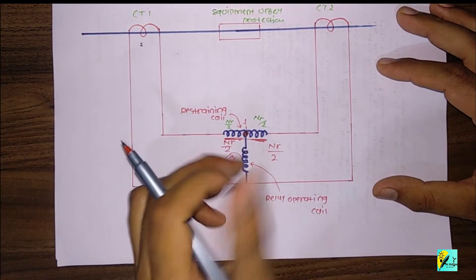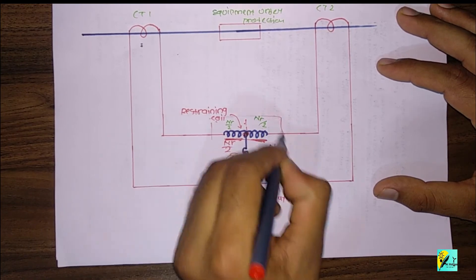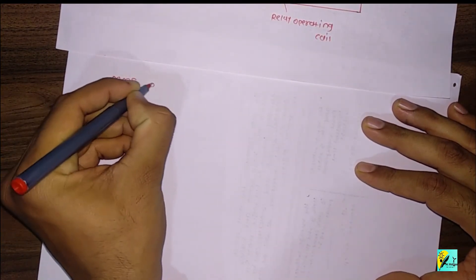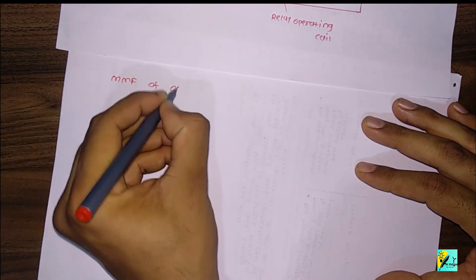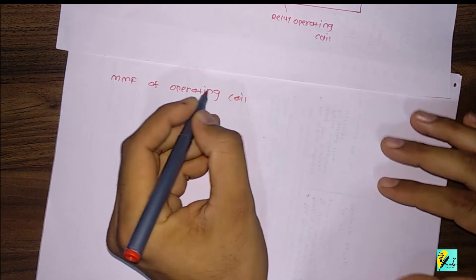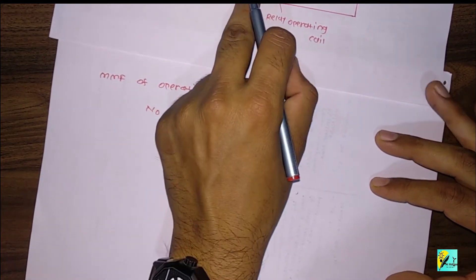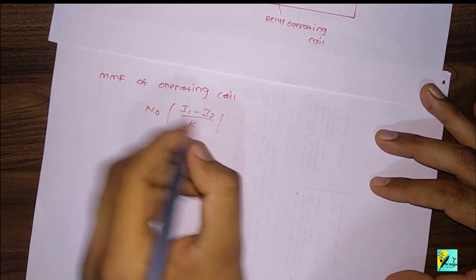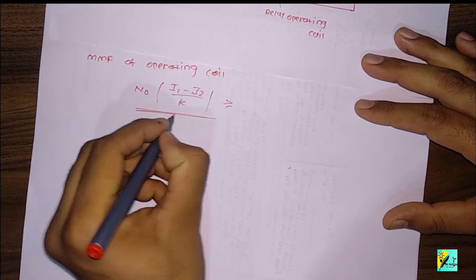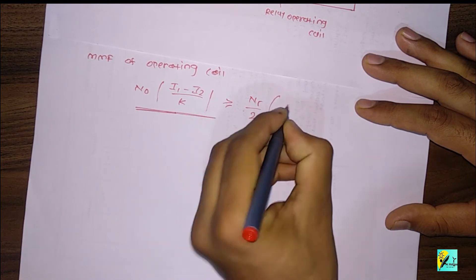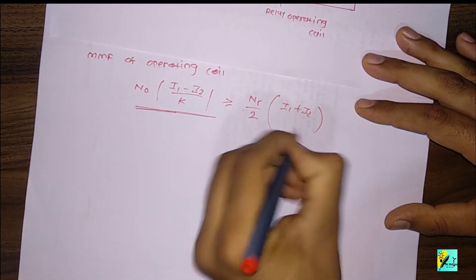Because of this restraining coil, the MMF of the operating coil — which is N0 multiplied by the difference (I1 minus I2) — should be greater than Nr/2 multiplied by (I1 plus I2)/2. This is the MMF of the operating coil, and it should be greater than the restraining MMF.